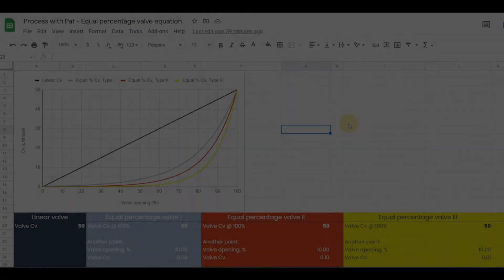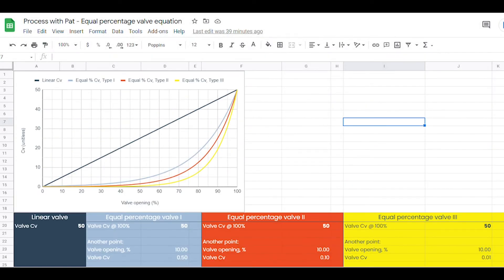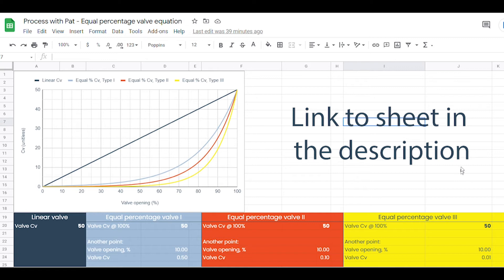The implication of this is that whereas there is only one possible linear characteristic valve with a CV of 50, there are theoretically infinite amounts of equal percentage valves with the CV of 50 depending on how I define these parameters.